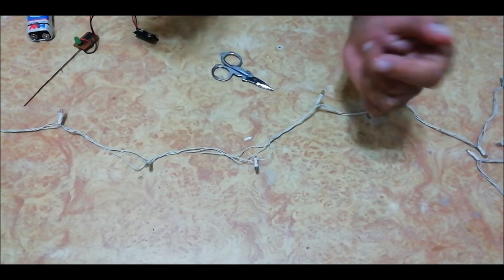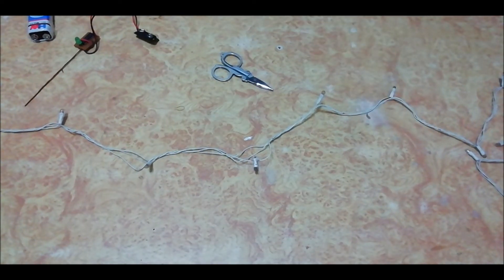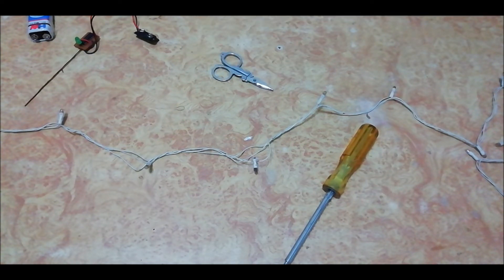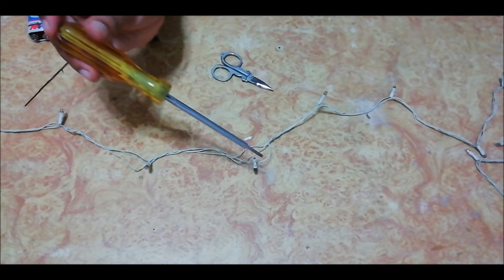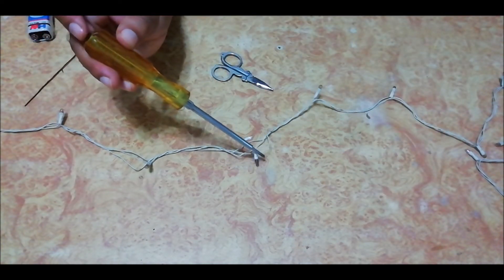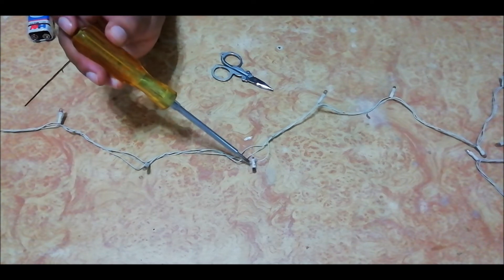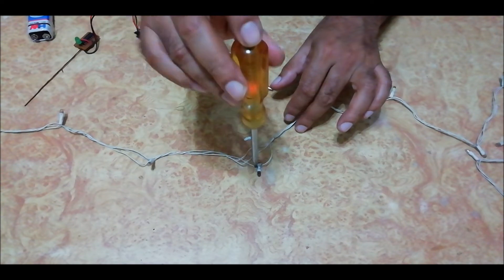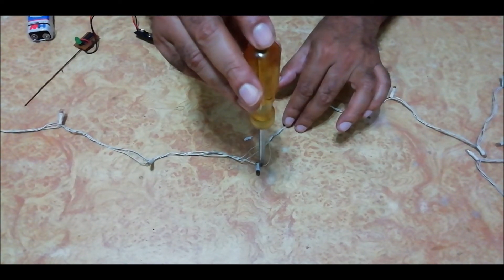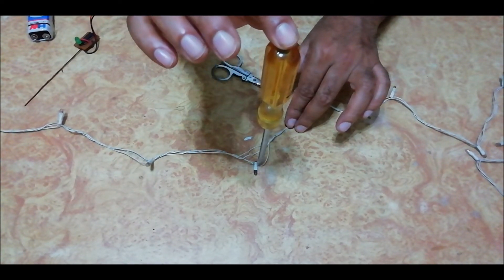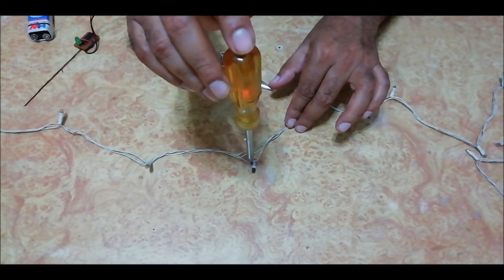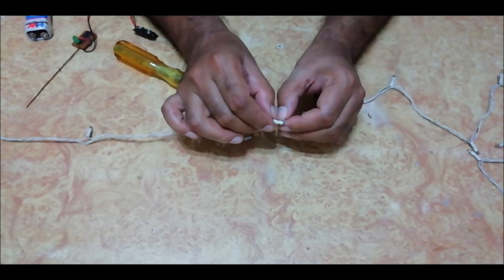We can also verify this bulb with our traditional tester. So let us verify by giving power again to the light. You can see there is voltage, but at this point... Here we can do two things: either short circuit these two contact points, or take a rice bulb from any old series light and replace it.